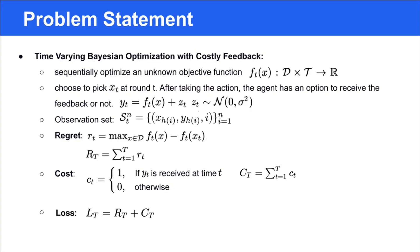To measure the performance of algorithms, we define the regret and the cost. For simplicity, we consider the instantaneous cost equal to 1 if the agent decides to receive the feedback; otherwise, it's 0. In practice, we want the regret and cost to both be small, so the final loss is defined as the sum of the cumulative regret and cost.